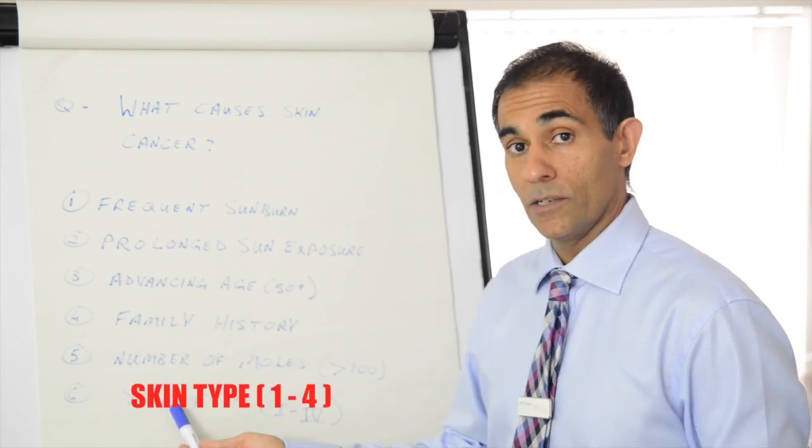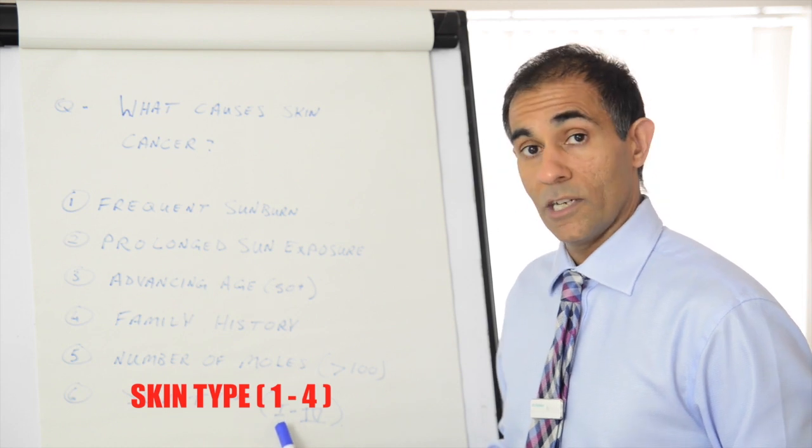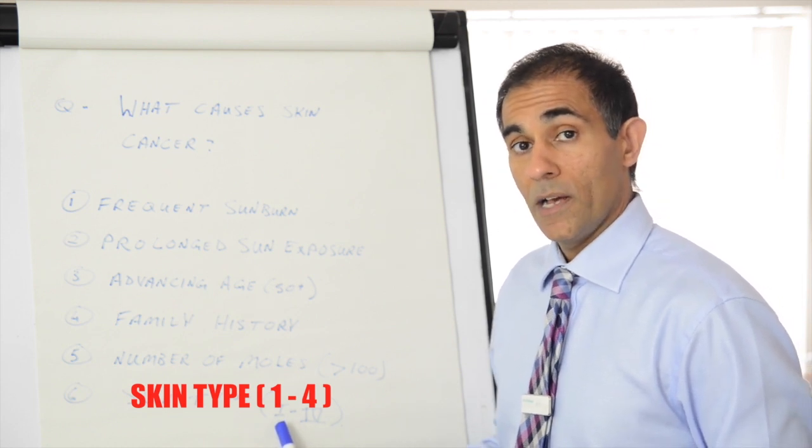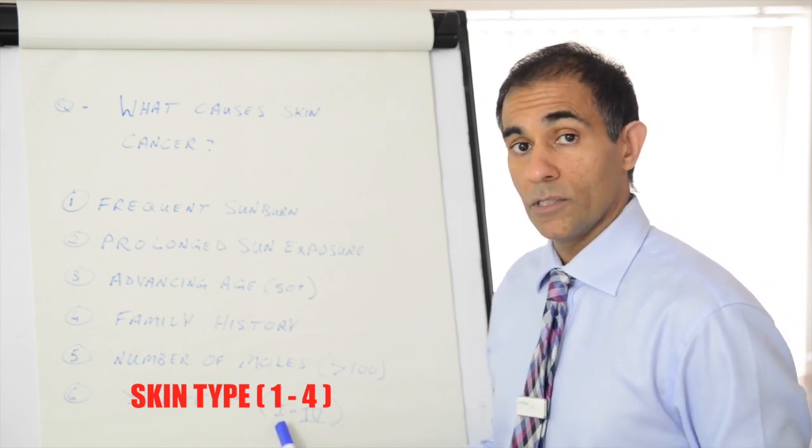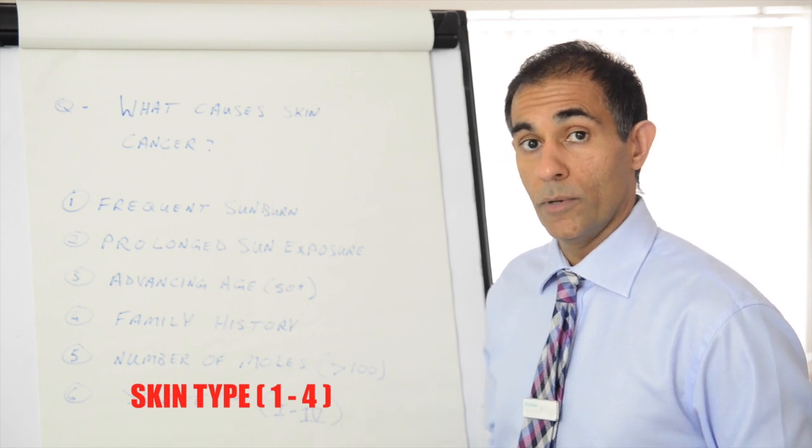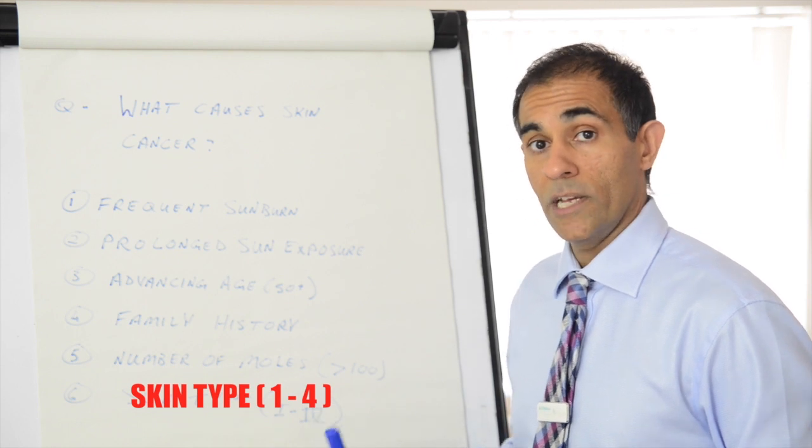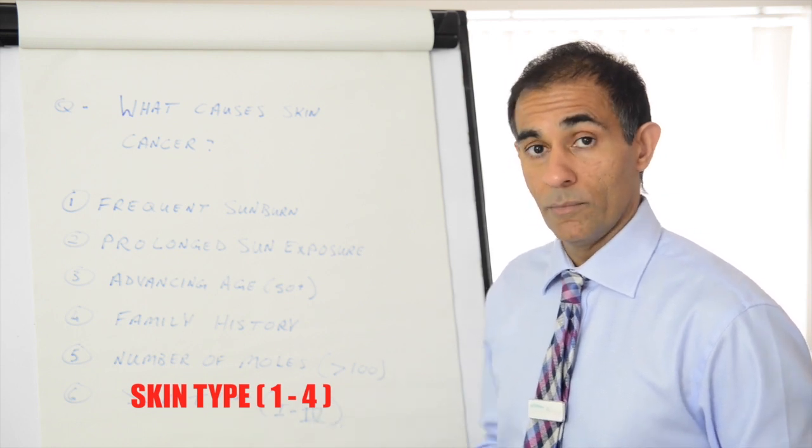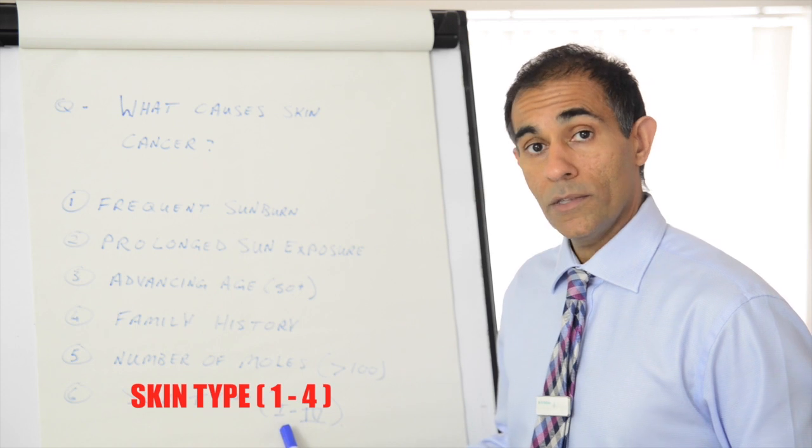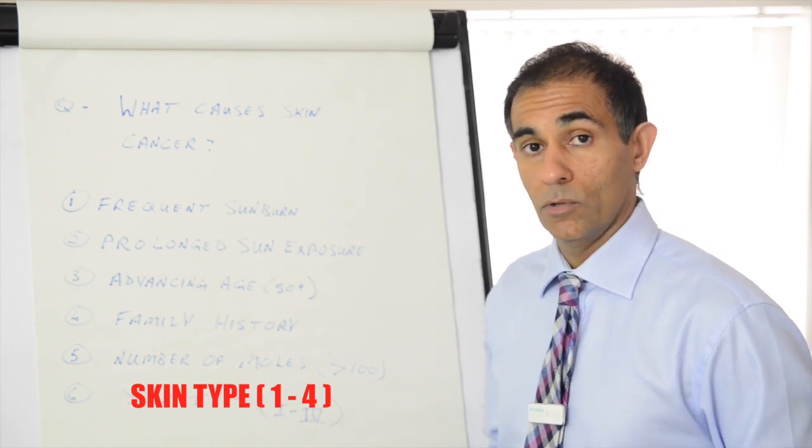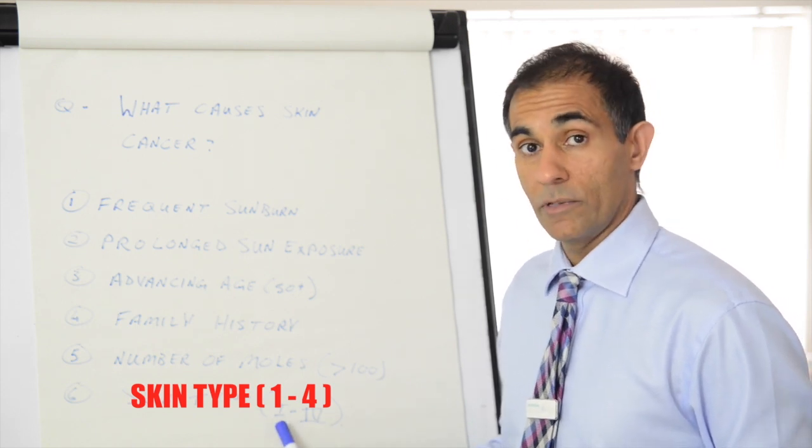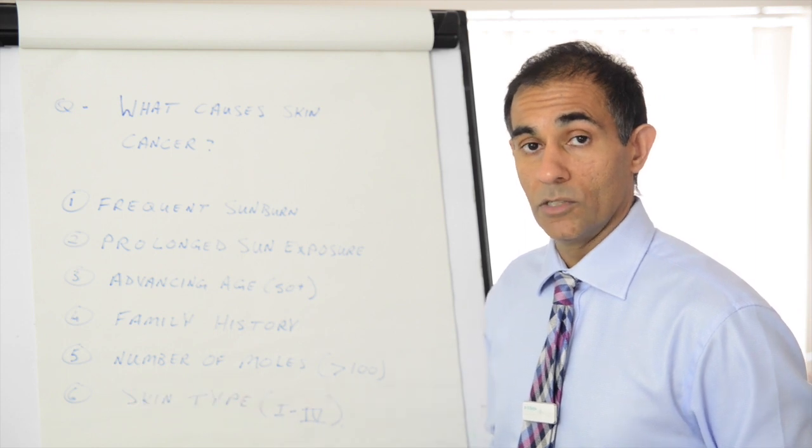And finally your skin type. Often we divide skin types into one to four. Skin type one refers to somebody who is very prone to burning and doesn't quite have the ability to tan. Skin type four refers to somebody who tans quite easily and doesn't burn very easily. Skin type one unfortunately has the highest risk of skin cancer when they're essentially related to their propensity to sunburn.